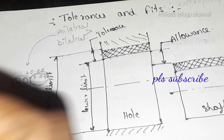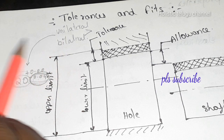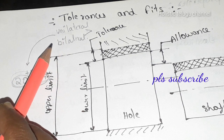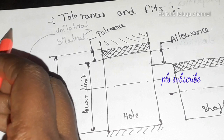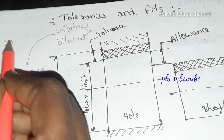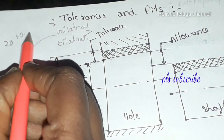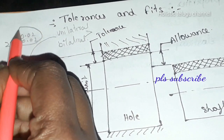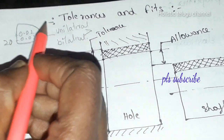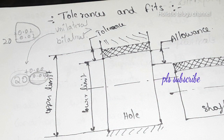However, in bilateral tolerance is allowed on both sides. For example, a nominal size of 20 is written as plus 0.02 and minus 0.02 — tolerance is allowed on both sides. That is the bilateral system of tolerance.